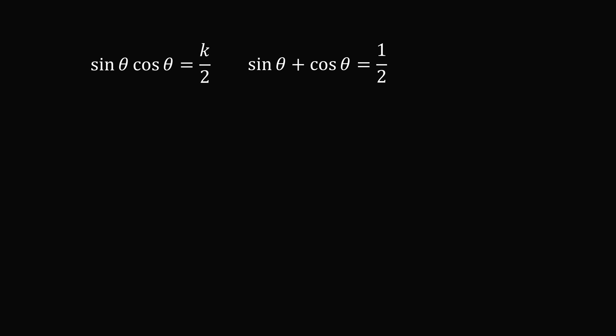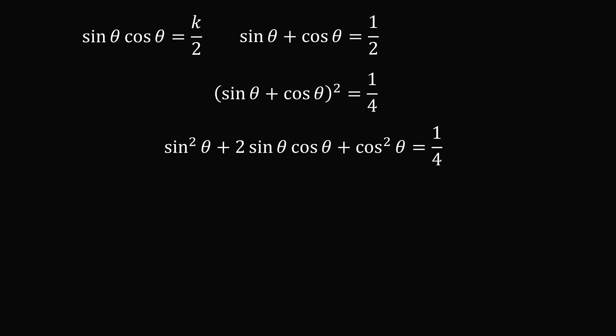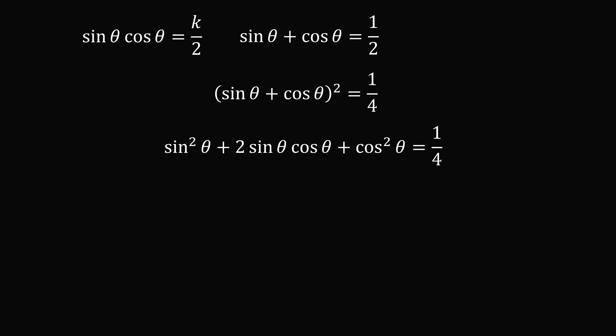Since the roots are sine theta and cosine theta, sine theta times cosine theta equals k over 2, and sine theta plus cosine theta equals 1 over 2. We square the second equation: the square of sine theta plus cosine theta equals 1 over 4. Expanding gives sine squared theta plus 2 sine theta cosine theta plus cosine squared theta equals 1 over 4. Since sine squared plus cosine squared equals 1, and 2 sine theta cosine theta equals k, this simplifies to 1 plus k equals 1 over 4, so k equals negative 3 over 4, or negative 0.75.